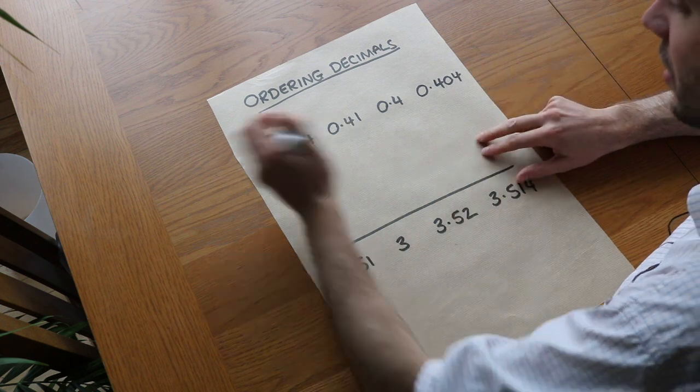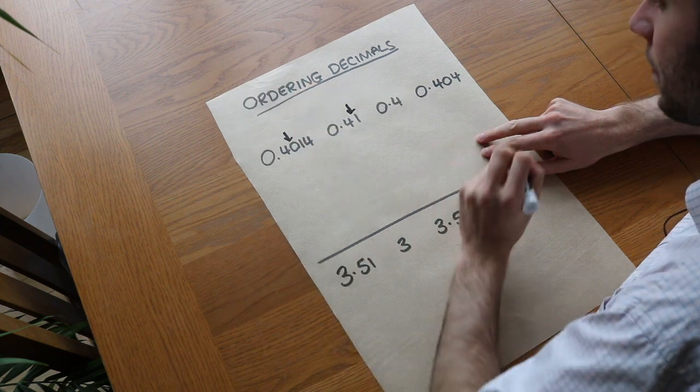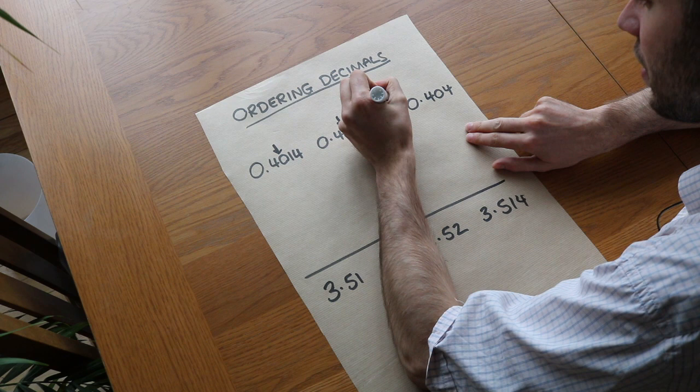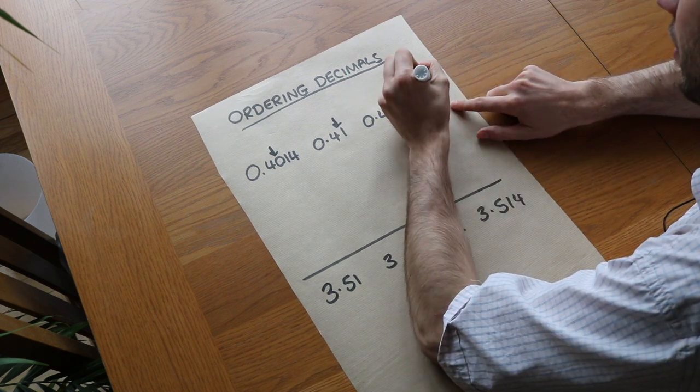So we next look to the hundredth digit. We can see the hundredth digit here, that's the hundredth digit here. There is no hundredth digit here, you can sort of imagine it as zero if you like. And then the hundredth digit here is zero again.